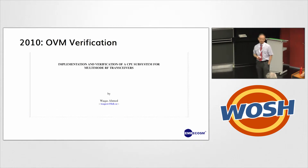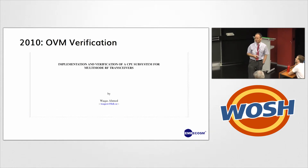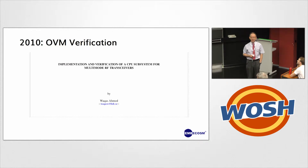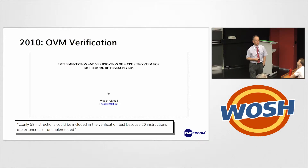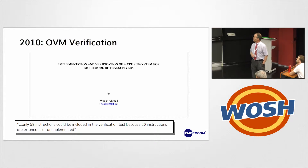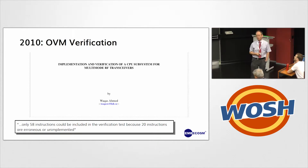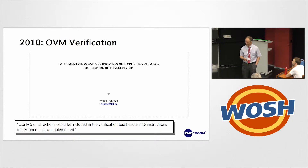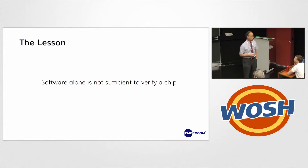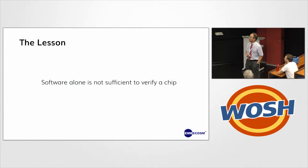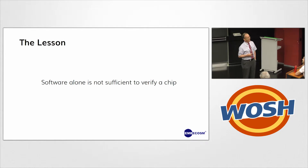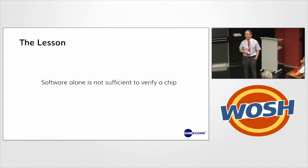Until 2010, when we were very grateful to Mr. Waqas Ahmed, who did his MSc at KTH in Sweden. There is this telling little paragraph: only 58 instructions could be included in the verification test, because 20 instructions are erroneous or not implemented — the reason being the compiler never generated them. So when you ran that software, you didn't realize they weren't there. The moral is: software alone is not sufficient to verify a chip. However, it is a very useful adjunct to improve the quality of your chip and adds to what you would do in proper hardware verification.